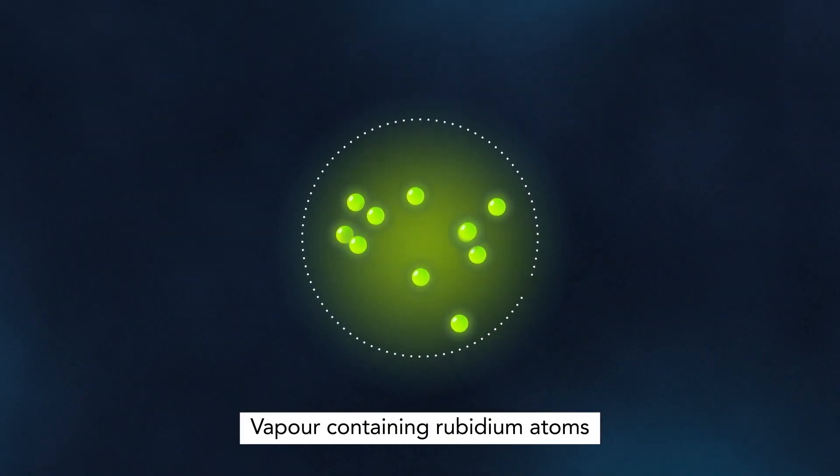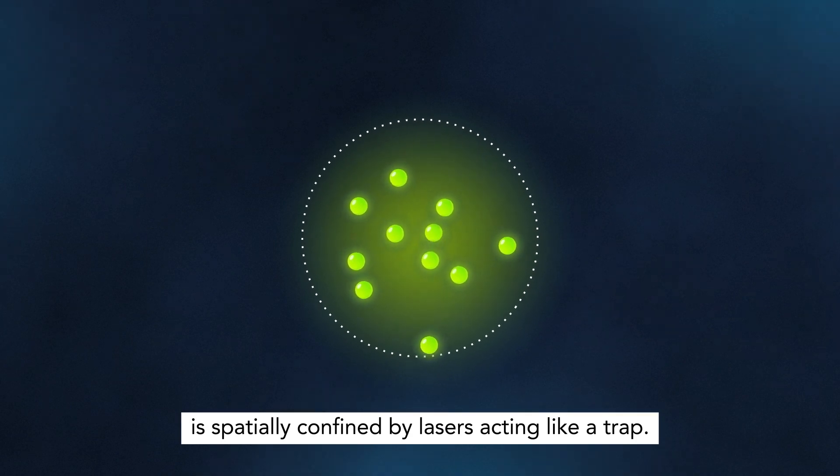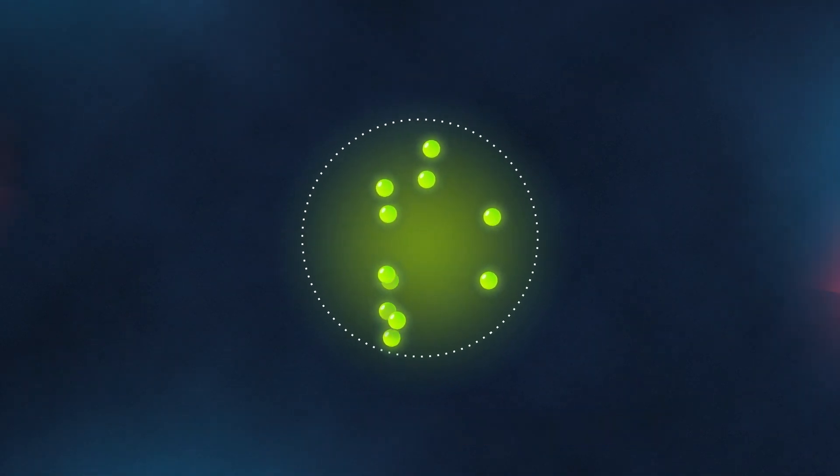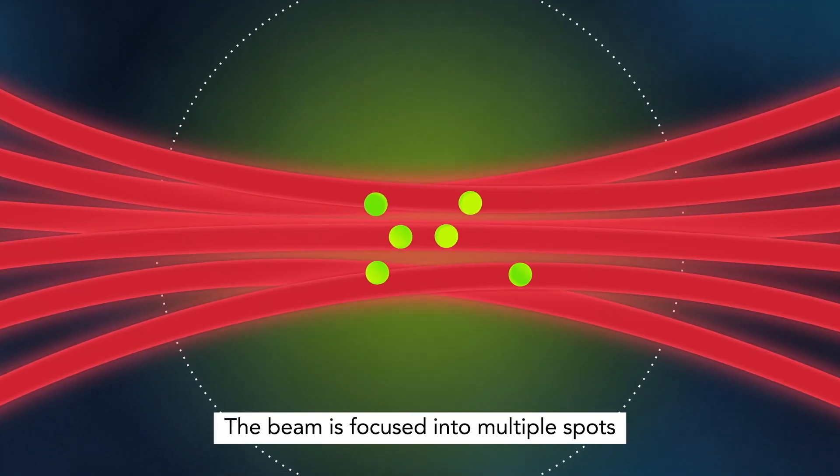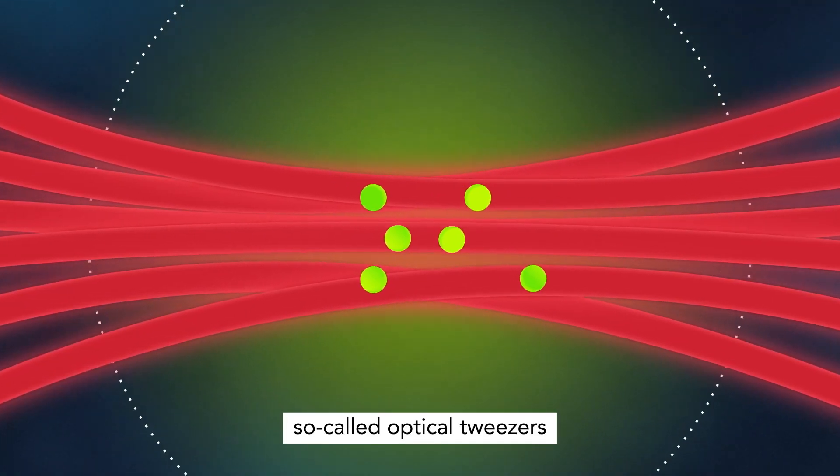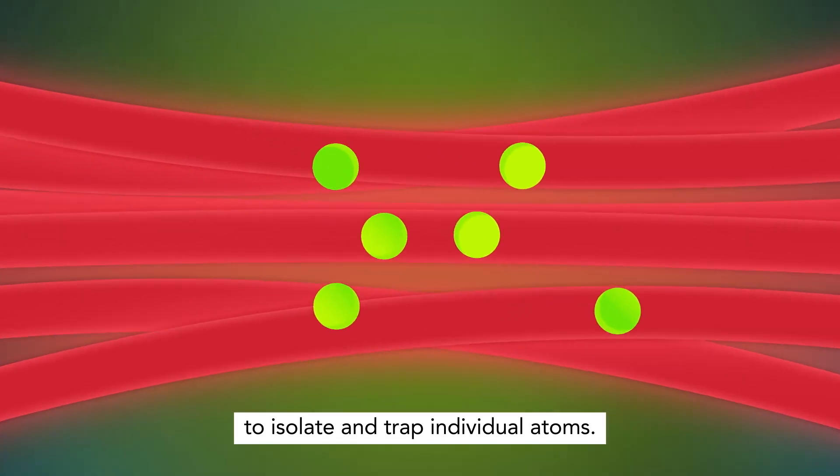Vapor containing rubidium atoms is spatially confined by lasers acting like a trap. Another laser beam is shown on the trap. The beam is focused into multiple spots, so-called optical tweezers, to isolate and trap individual atoms.